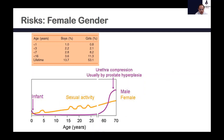Female gender itself is a risk factor for UTI. A girl has a lifetime risk of around 53% of having a urinary tract infection, compared to boys. Males are at higher risk during early life — the first one to two years before toilet training — and later in life with prostatic hyperplasia. Females, especially after adolescence and early adult life when sexually active, have an increased risk of recurrent urinary infections.